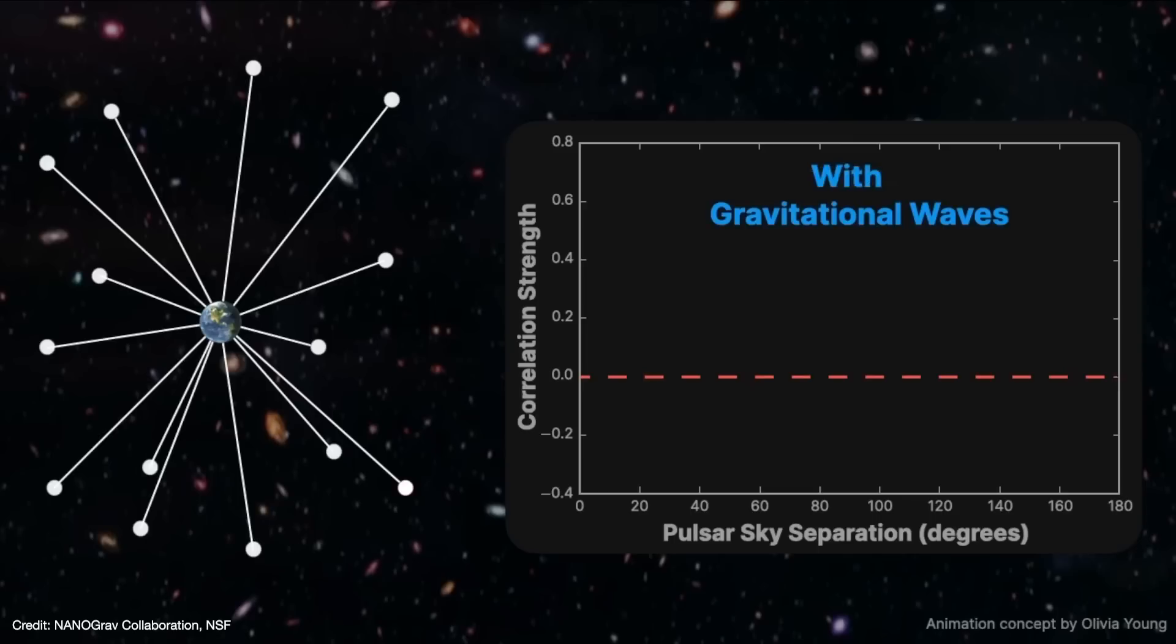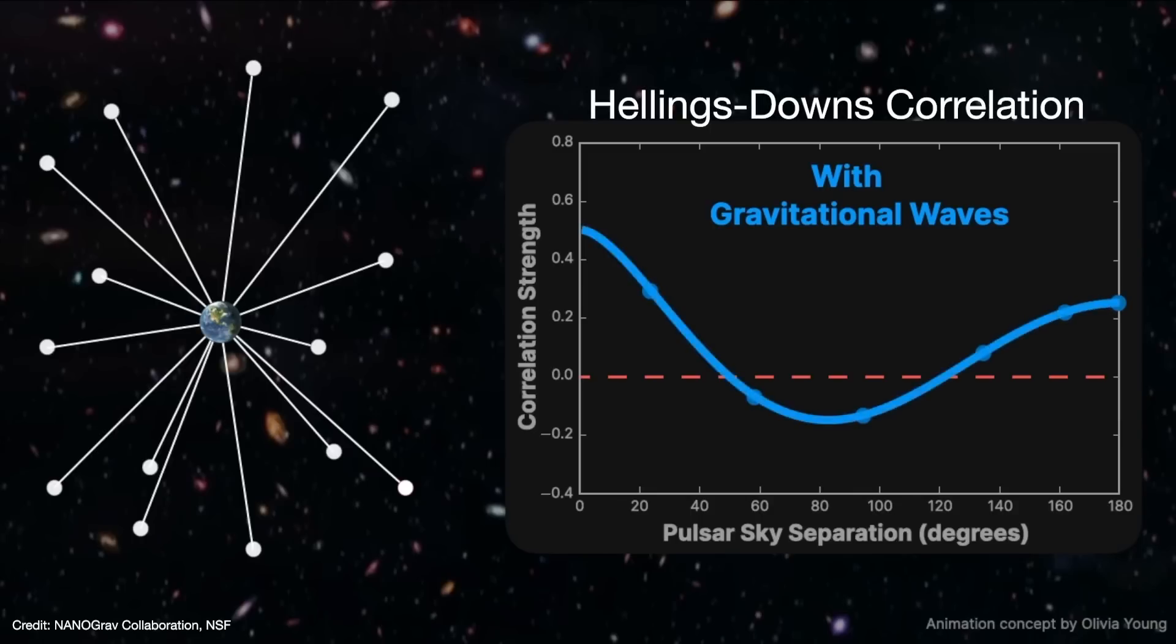But how do they know that all of these changes in Pulsar Timings were in fact due to gravitational waves, and not due to just random noise in the data? Well, it turns out that gravitational waves should produce a particular pattern of changes in the timing delays between different pairs of pulsars. So as the wave passes through, different pulsars will show different timing delays depending on how far apart in the sky they are from each other. This pattern is called the Hellings-Downs correlation.